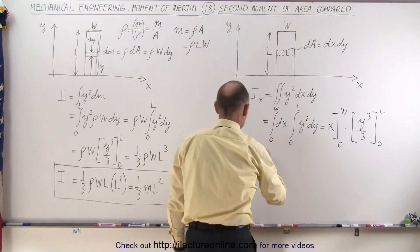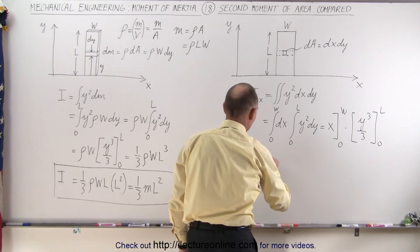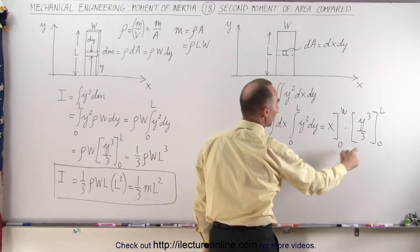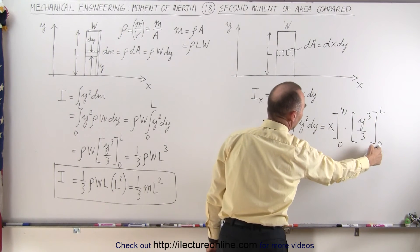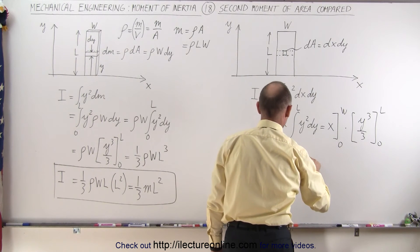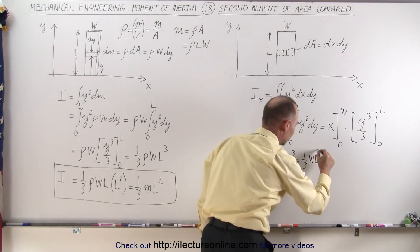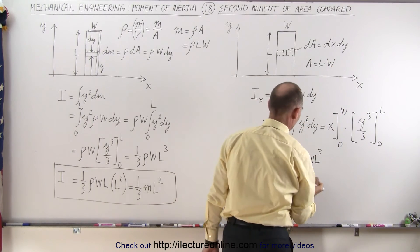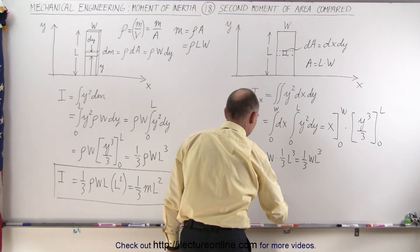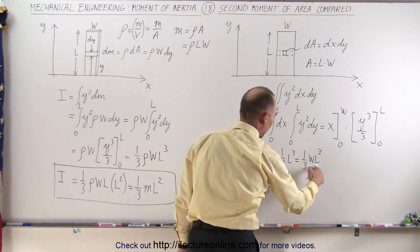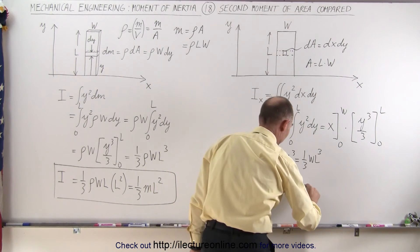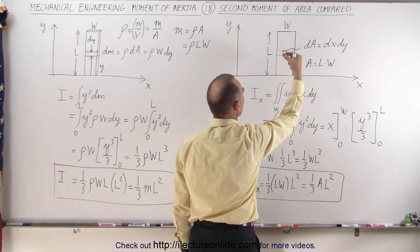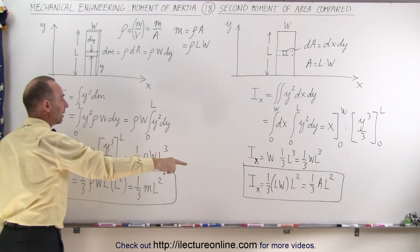Evaluating the integrals: x evaluated from 0 to W gives W, and y³/3 evaluated from 0 to L gives (1/3)L³. So the second moment of area with respect to the x-axis equals W × (1/3)L³, which equals (1/3) × W × L × L². Recognizing that the area equals length times width, we can write this as (1/3) × A × L².